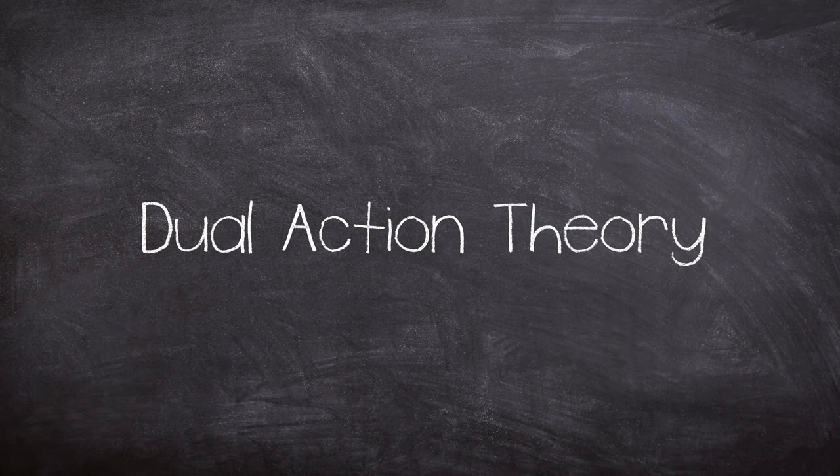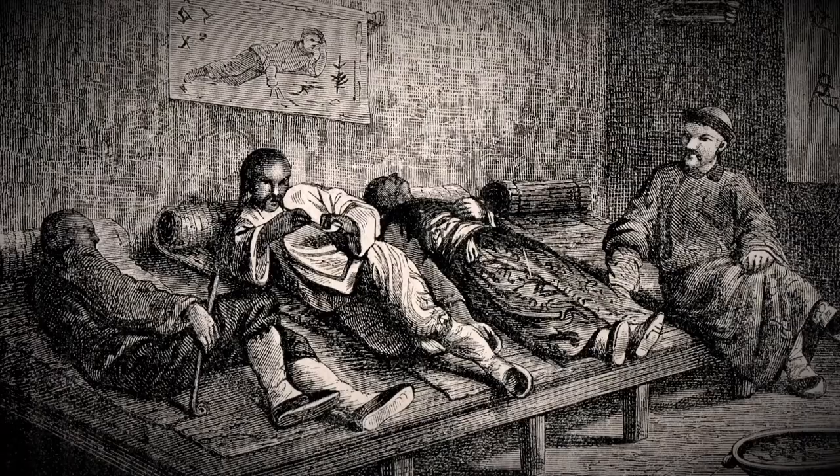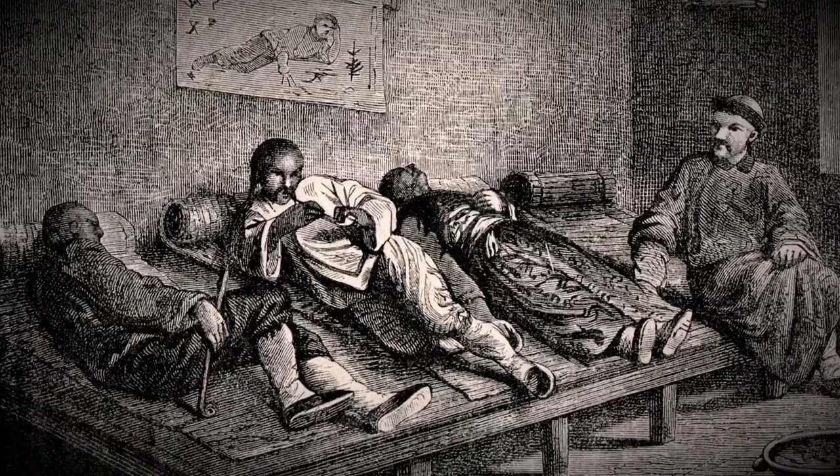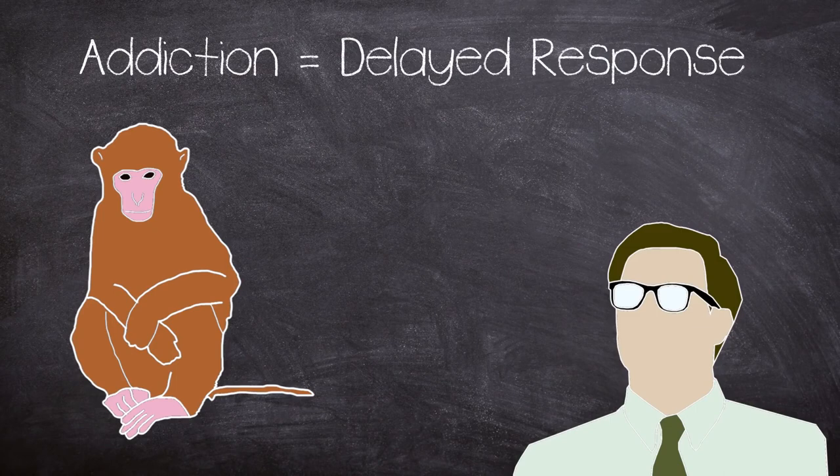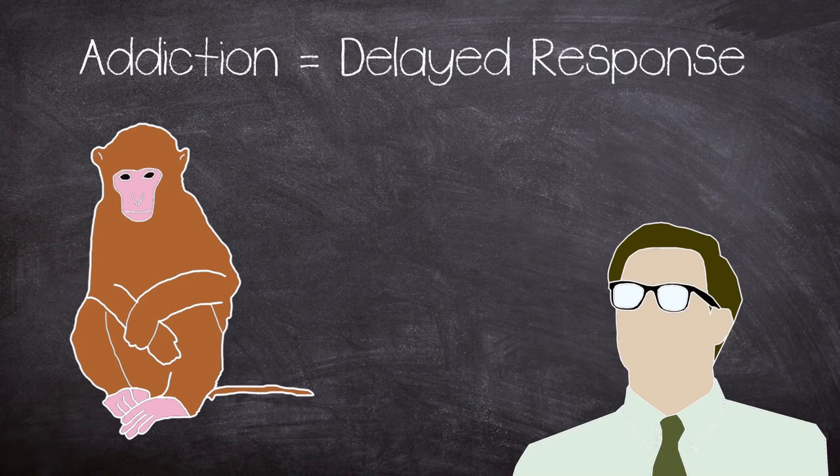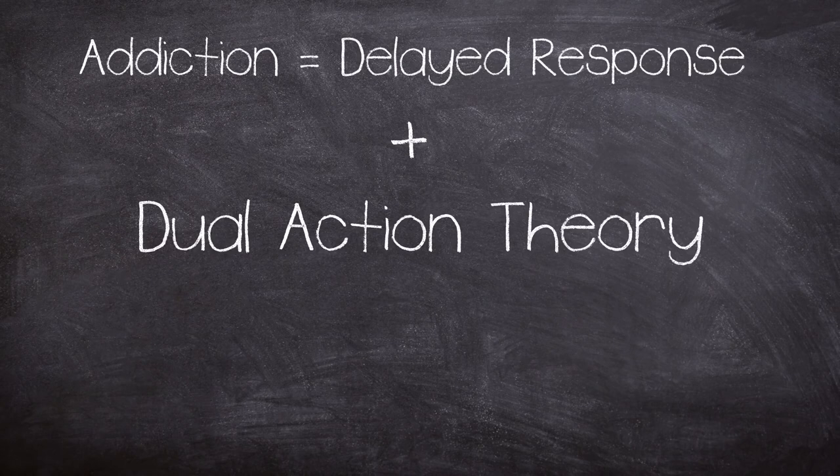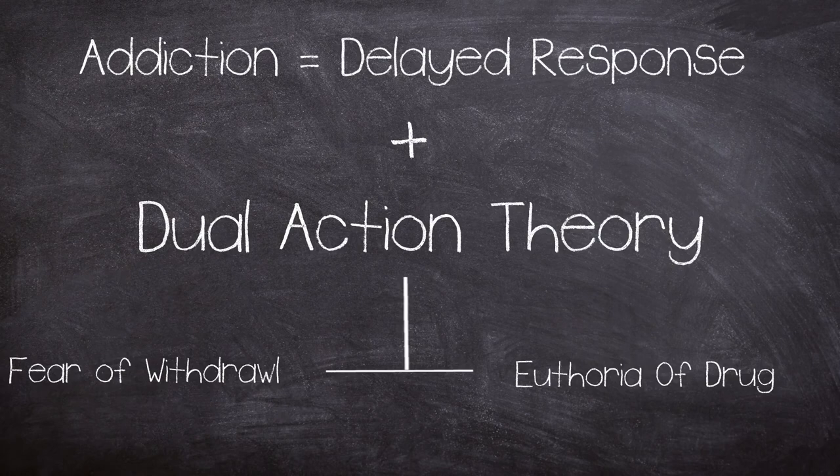This theory was coined as dual action theory. Knowing that human addiction is linked to the high of the drug and the aversion from withdrawal, Seavers took on the suggestion from Harry Harlow that addiction in animals is a delayed condition response, where animals learn to associate the administering of the drug with positive sensations. Seavers combined Harlow's suggestion with his own theory of addiction as euphoria from the drug combined with relief from withdrawal.